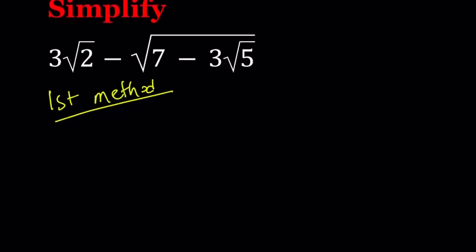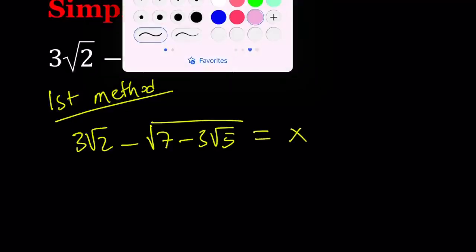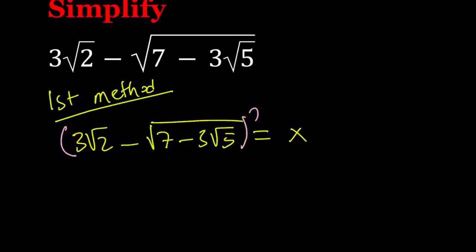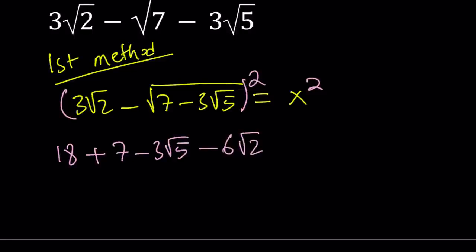Our first method involves setting this equal to something. Let's call this x, and then squaring both sides. When we square both sides, we have something that looks like a minus b, so let's use the formula. a squared is going to be 18, plus b squared, which will get rid of the radicals, minus 2ab. That's going to be 6 root 2 multiplied by square root of 7 minus 3 root 5, and that equals x squared.